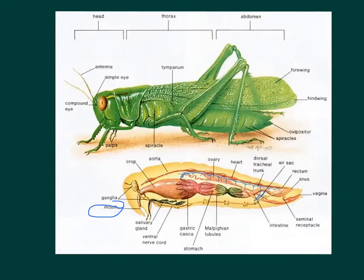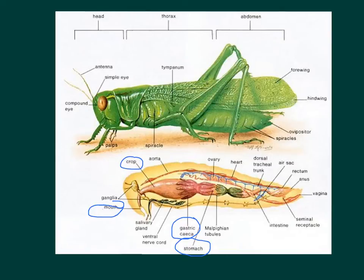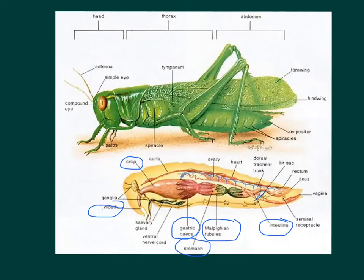Then it has the gastric ceca. I do want you to know the crop and the gastric ceca. The gastric ceca is involved with enzymes that break down the food. Then right behind the gastric ceca is the stomach — it is a little bit smaller than the crop, as you can see right there. And then behind that are the malpighian tubules, which deal with waste disposal. We're heading from the malpighian tubules into the intestine — these green things right here — into the intestine.